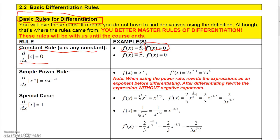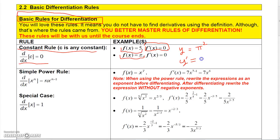It doesn't matter what the constant is — if it's a constant, the derivative is zero. So if I give you pi, that derivative is zero. One time I gave students pi squared, and they tried to use the power rule on it, but it doesn't matter — pi squared is a constant. So the derivative, written as y prime, would be zero. The derivative of any constant is always zero.